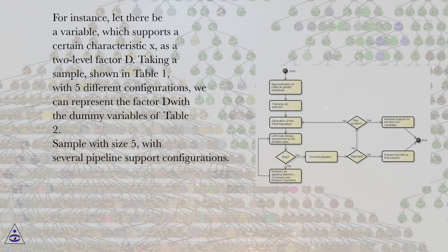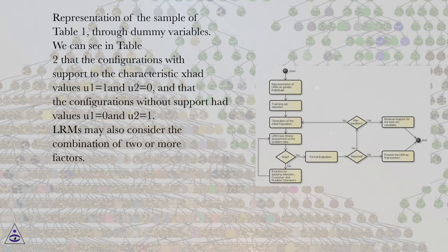Sample with size 5, with several pipeline support configurations. Representation of the sample of table 1 through dummy variables. We can see in table 2 that the configurations with support to the characteristic had values U1 equals 1 and U2 equals 0, and that the configurations without support had values U1 equals 0 and U2 equals 1.